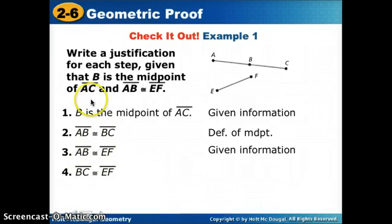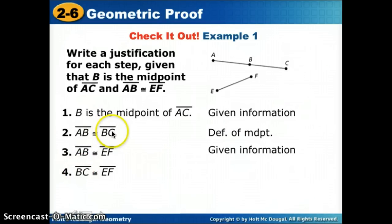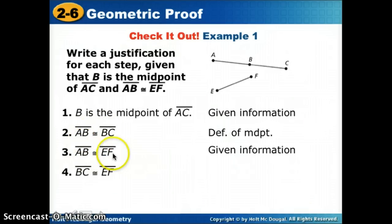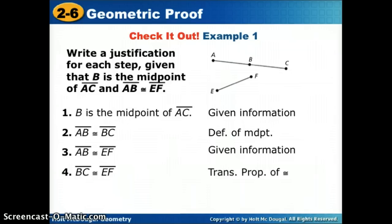For step four — how do we get there from the previous statements? Step four has EF, which is in step three, and BC, which is in step two. There's a connector: if BC is congruent to AB, and AB is congruent to EF, then we can say BC is congruent to EF. That connector is like a train — we call that the transitive property.